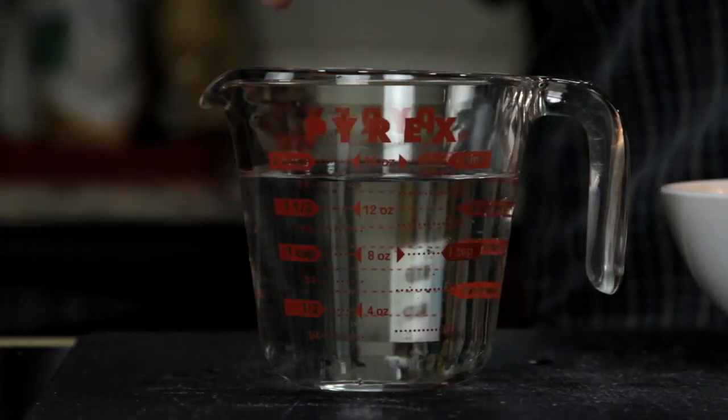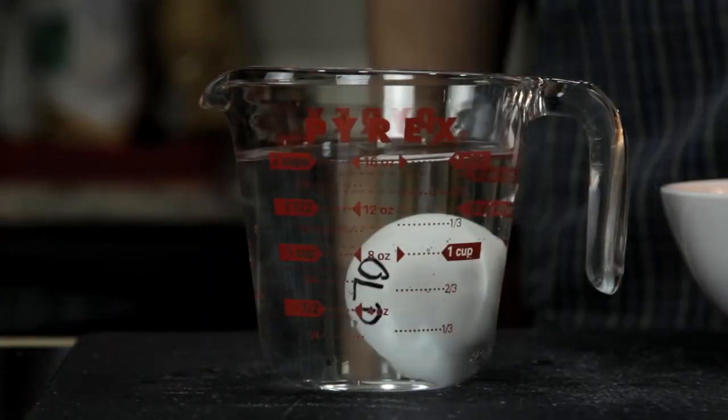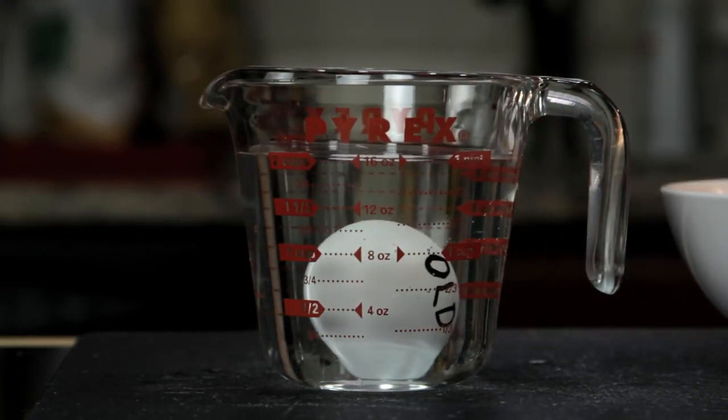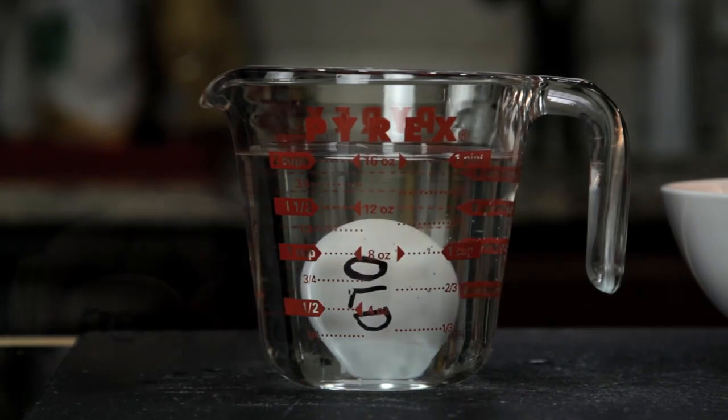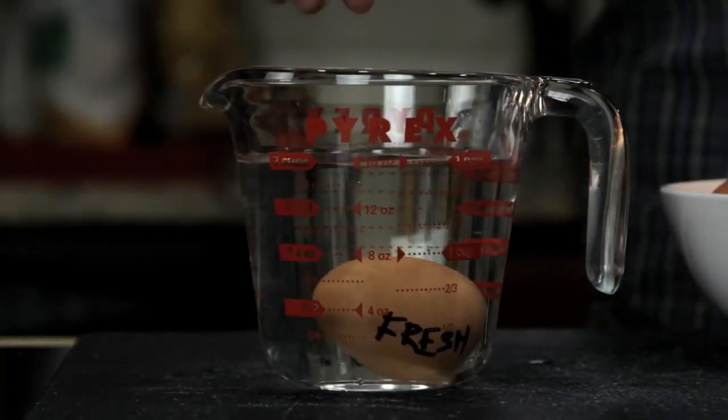You can also tell how fresh an egg is by carefully putting it into a cup of water. As an egg ages, the air pocket in the fat end is going to get bigger and bigger, which will make the egg stand upright or sometimes even float. A really fresh egg will sink and lie flat on its back like this.